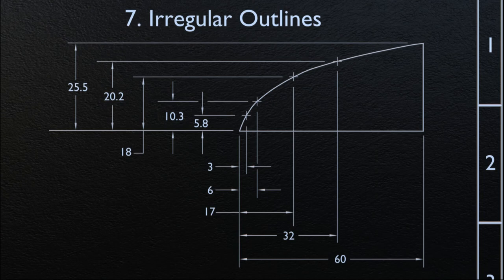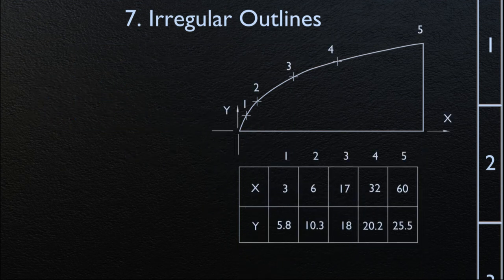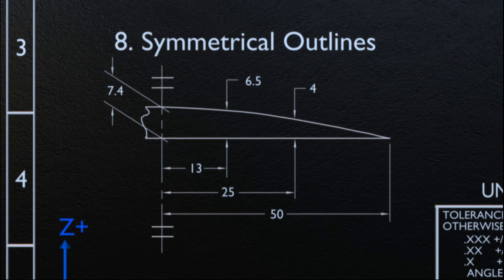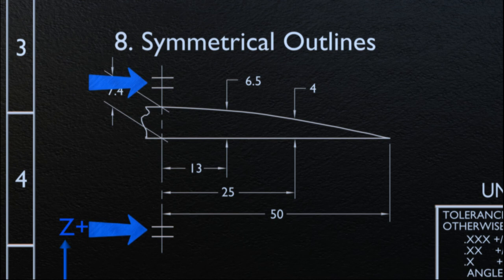Irregular outlines may be dimensioned as discussed. Circular or non-circular outlines may be dimensioned by the rectangular coordinate or offset method. Coordinates are dimensioned from baselines. Where many coordinates are required to define an outline, the vertical and horizontal coordinate dimensions may be tabulated, as illustrated. Symmetrical outlines may be dimensioned on one side of the center line of symmetry, such as where, due to the size of the part or space limitations, only part of the outline can be conveniently shown. One half the outline of the symmetrical shape is shown, and symmetry is indicated by applying symbols for part symmetry to the center line.